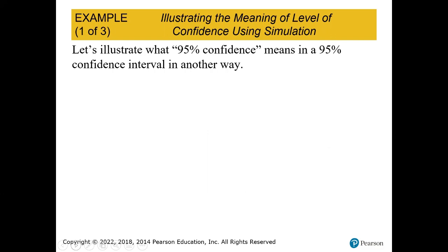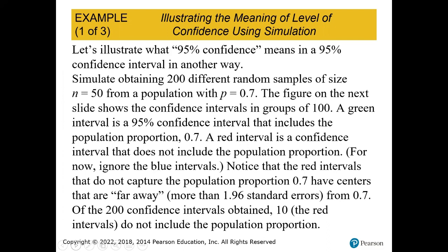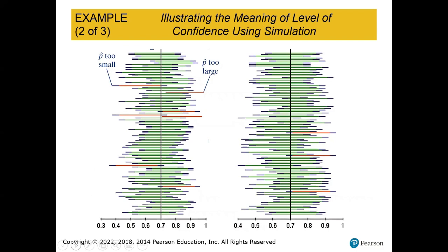Let's illustrate this with a simulation. We'll simulate obtaining 200 different random samples of size 50 from a population with a proportion of 0.70 — so 70% of individuals believe something. The values will be shown in groups of 100. A green interval is a 95% confidence interval that includes the population proportion of 0.70, and a red one does not. The red intervals that do not capture the population proportion have centers that are far away from 0.70.